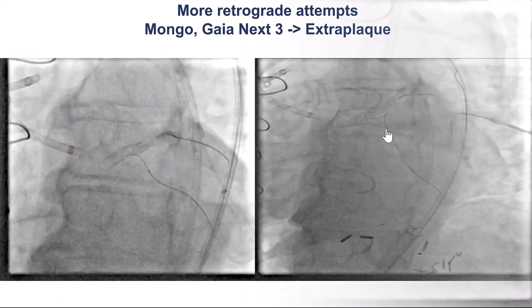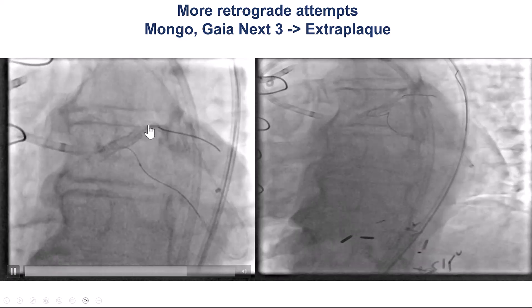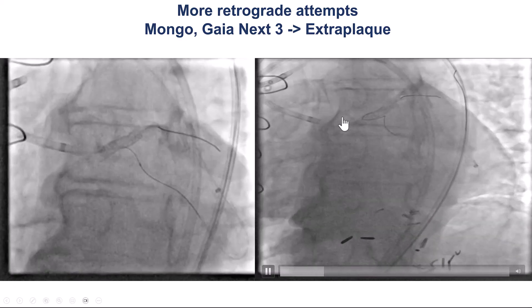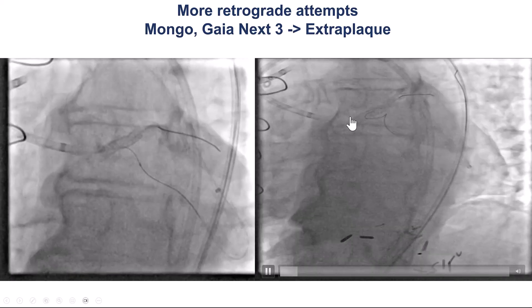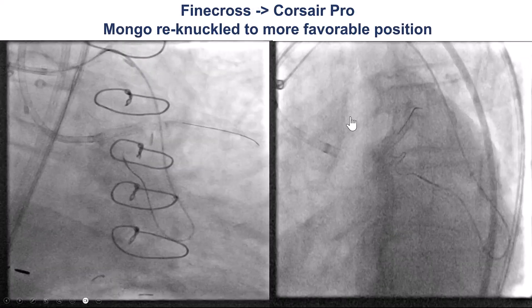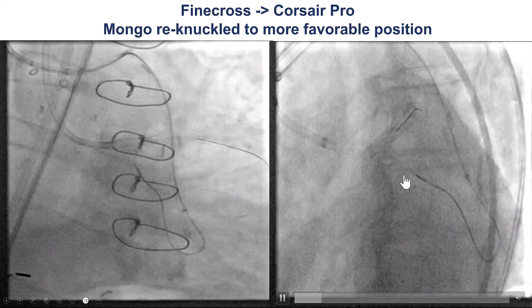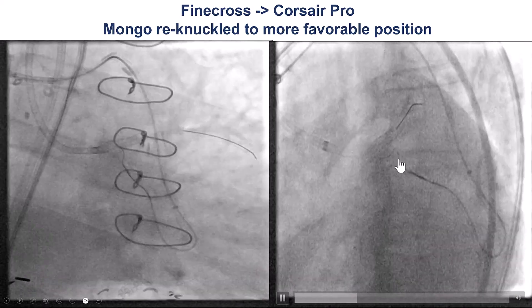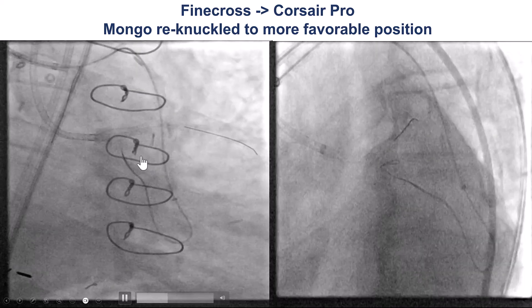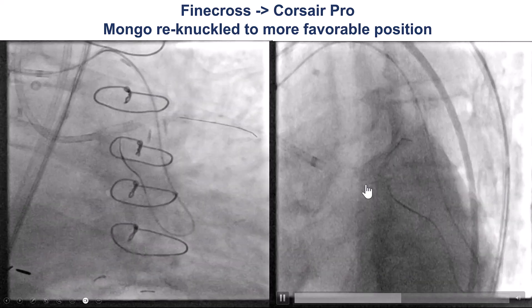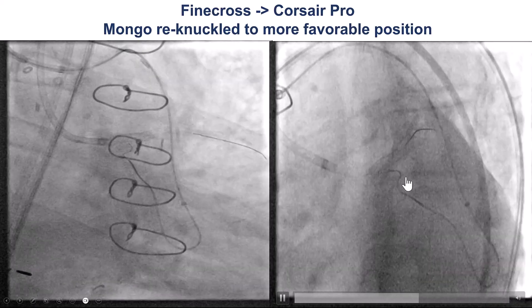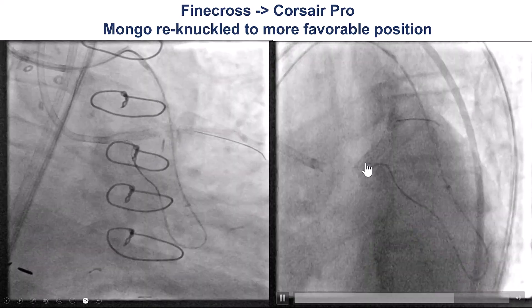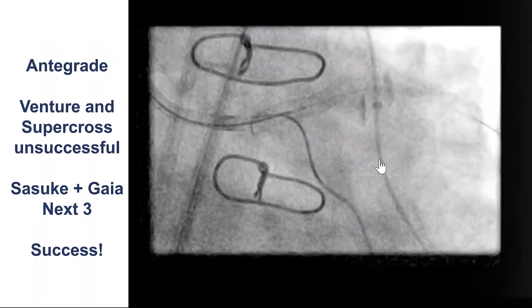However, despite that, we still had difficulty puncturing retrogradely into the antegrade stent — the wires came out going into different planes. After multiple attempts, we used a Gladius MG and a Gladius Mongo, and had difficulty redirecting to a favorable position, but eventually, after multiple attempts, we did find a good appearing location clarifying the proximal cap ambiguity.